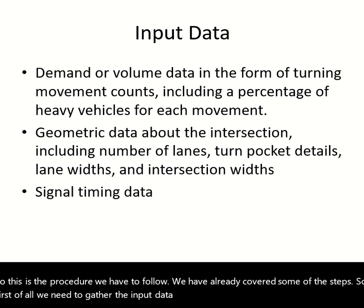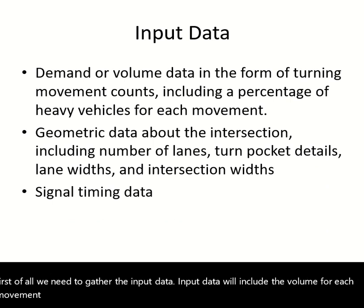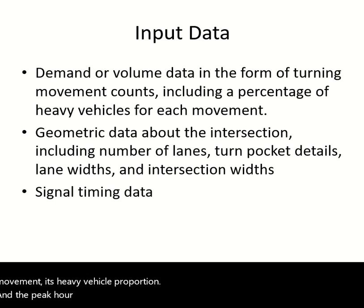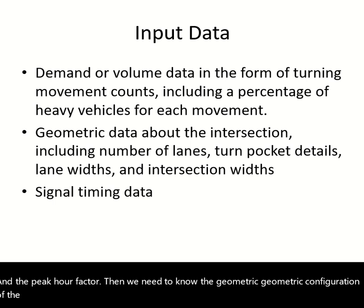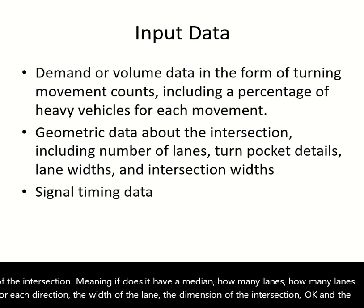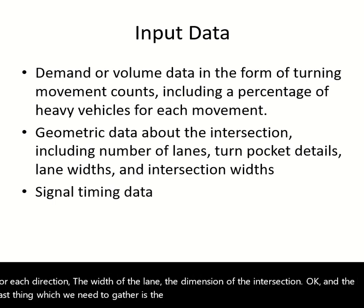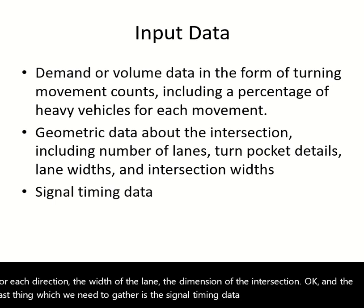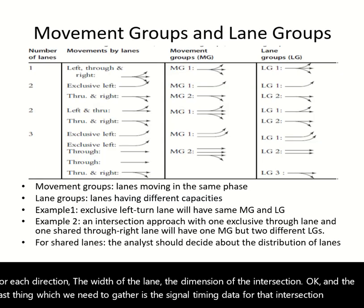Input data will include the volume for each movement, its heavy vehicle proportion, and the peak hour factor. Then we need to know the geometric configuration of the intersection — whether it has a median, how many lanes and bays for each direction, the width of the lane, and the dimensions of the intersection. We also need to gather the signal timing data for that intersection.